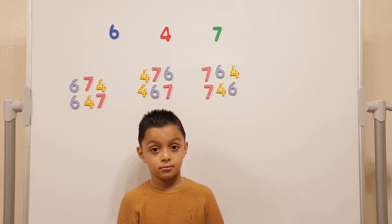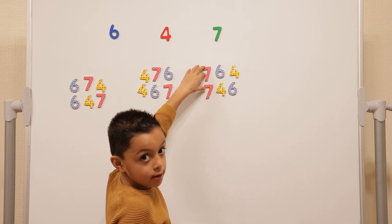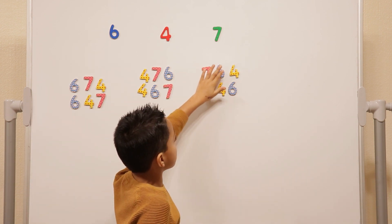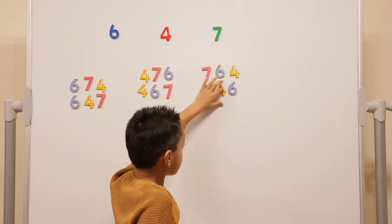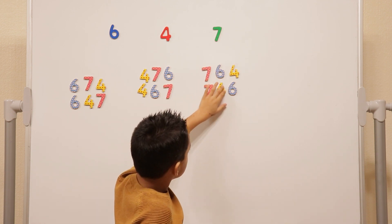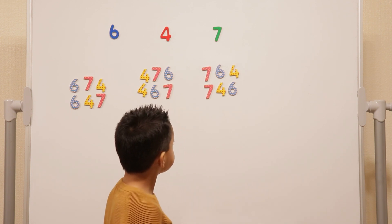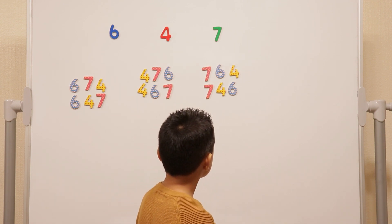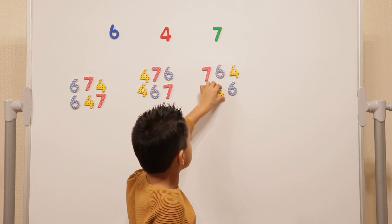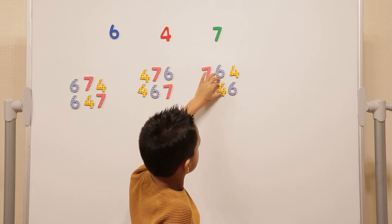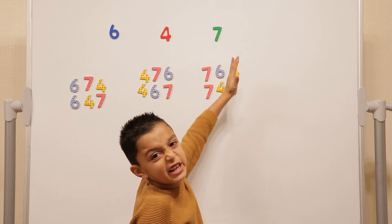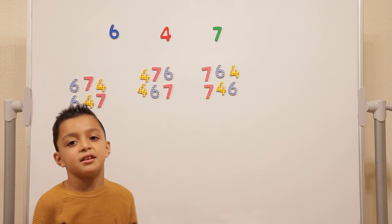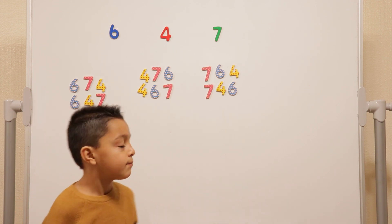Which number there is the biggest number? It's the only one that starts with seven, because seven has the most in the hundreds. And then this one's bigger because it has six tens — this only has four tens. So you compare the hundreds first and found the two numbers with the most hundreds, which was seven hundred and sixty-four and seven hundred and forty-six. And then you compare the tens. So seven hundred and sixty-four is the biggest number.